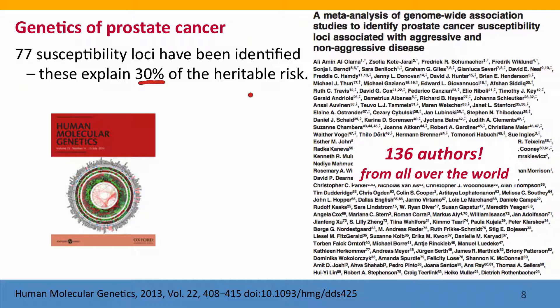GWAS are very powerful and can identify loci that each make only a very small contribution to risk, but we don't yet understand why they're not finding genes that make large contributions. The particular study discussed here is a meta-analysis combining information from multiple studies, with 136 researchers from all over the world contributing — illustrating the enormous collaborative effort these genome-wide association studies require.